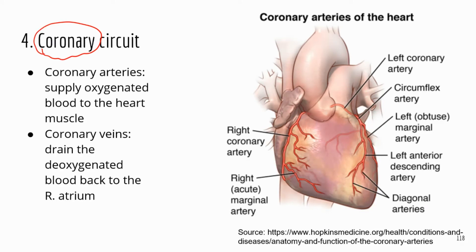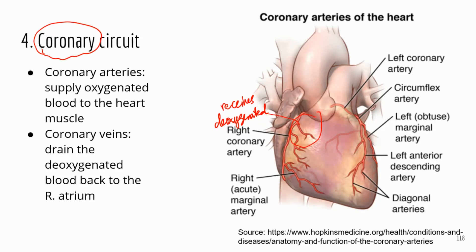Next, let's look at the coronary circuit. Coronary refers to the heart, so this is the pathway where oxygenated blood goes to the tissues of the heart so that the cardiac muscle cells can pick up oxygen and get rid of carbon dioxide. The deoxygenated blood then leaves the cardiac tissues and returns back to the right atrium — the chamber that receives deoxygenated blood from the entire body. This is essentially a little circuit for the heart to get oxygenated blood and perform gas exchange.